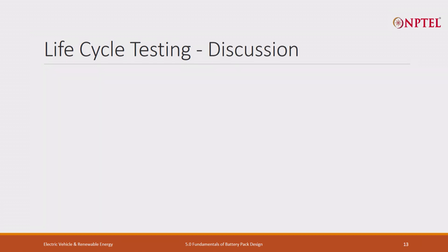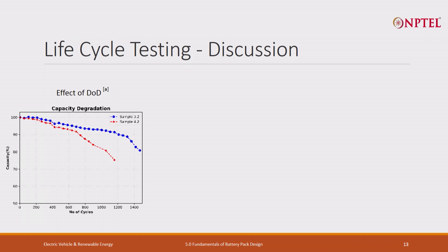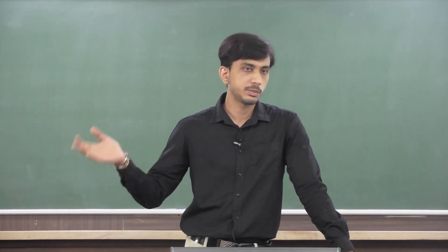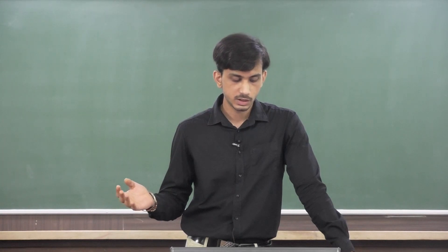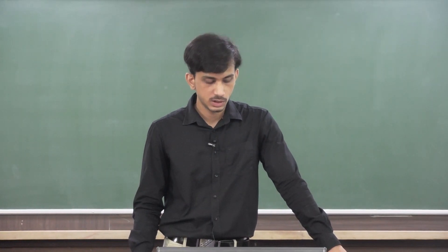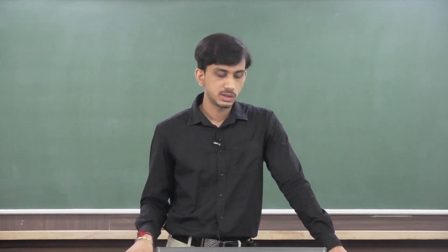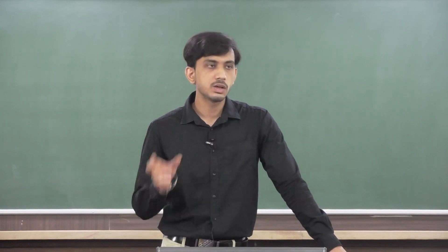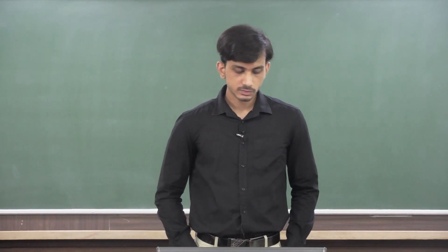Next we will see some results for lifecycle testing. First we will see the effect of depth of discharge. Depth of discharge is a very important parameter which tells how much of the battery capacity you are using each and every time. There are two different curves — one is for 80% DOD and the other is 100% DOD. 80% DOD means you are cycling the cell from 10% SOC to 90% SOC, never charging over 90% or discharging below 10%. DOD is just the window of your usage, so it can vary.